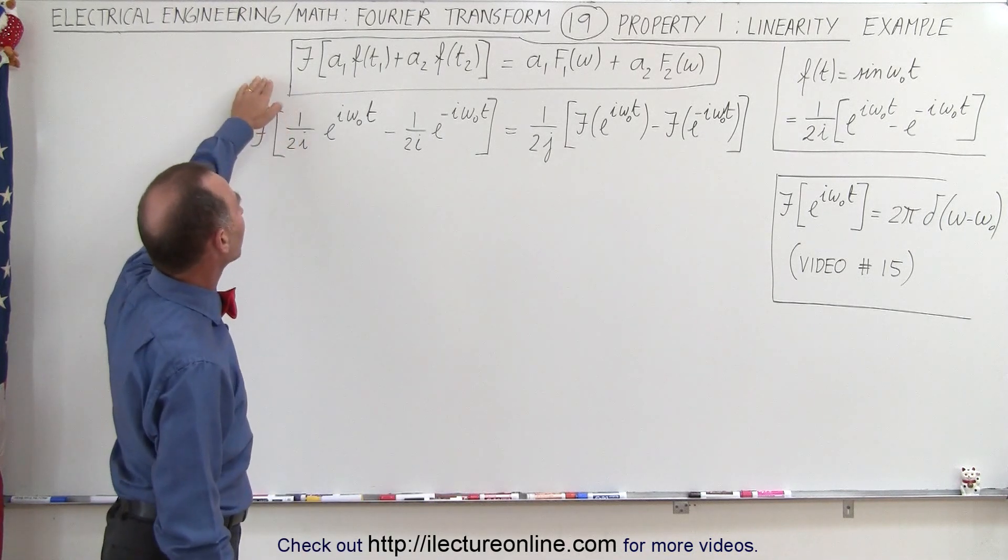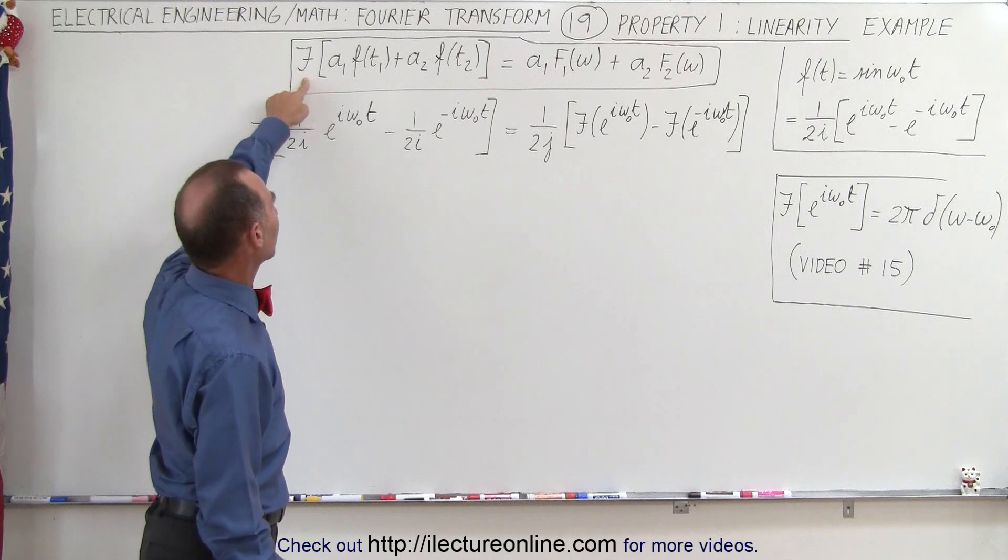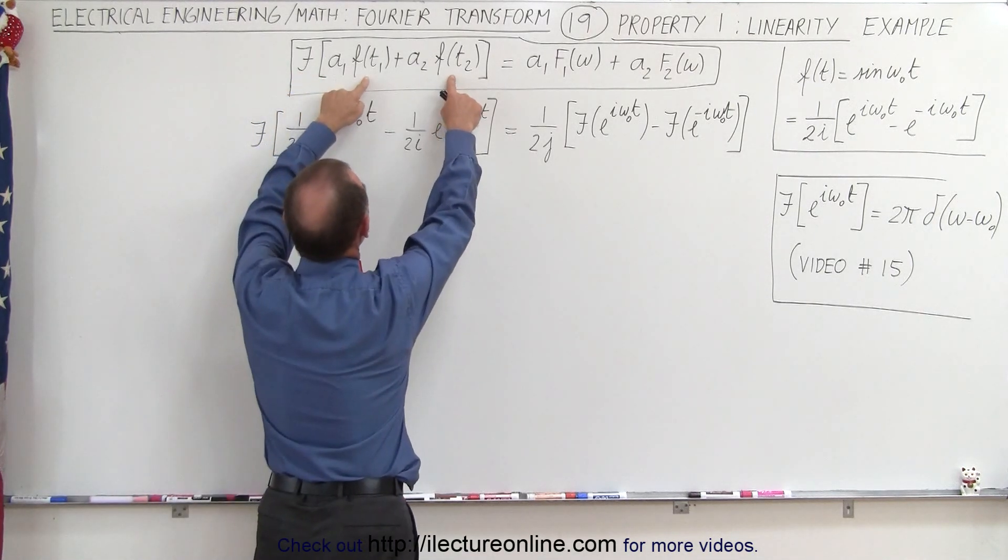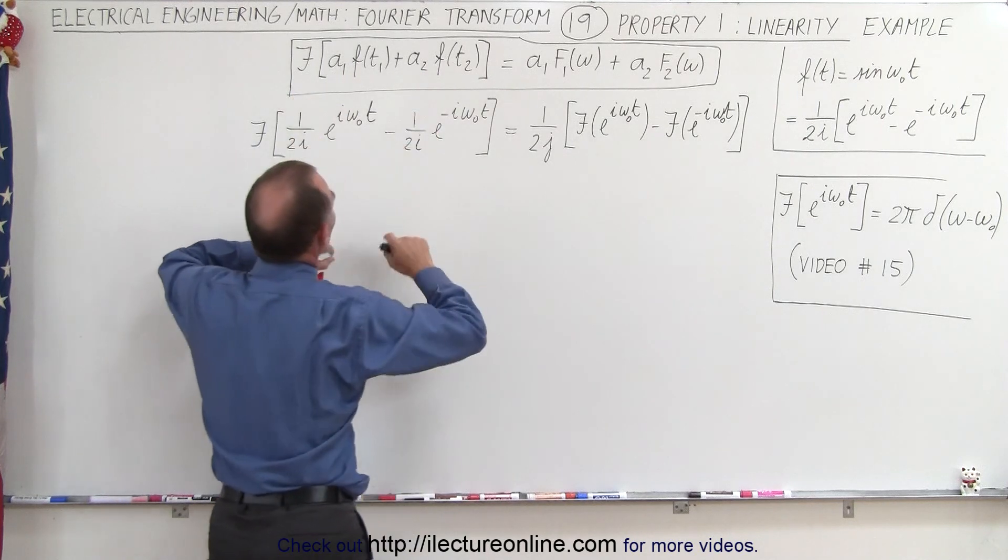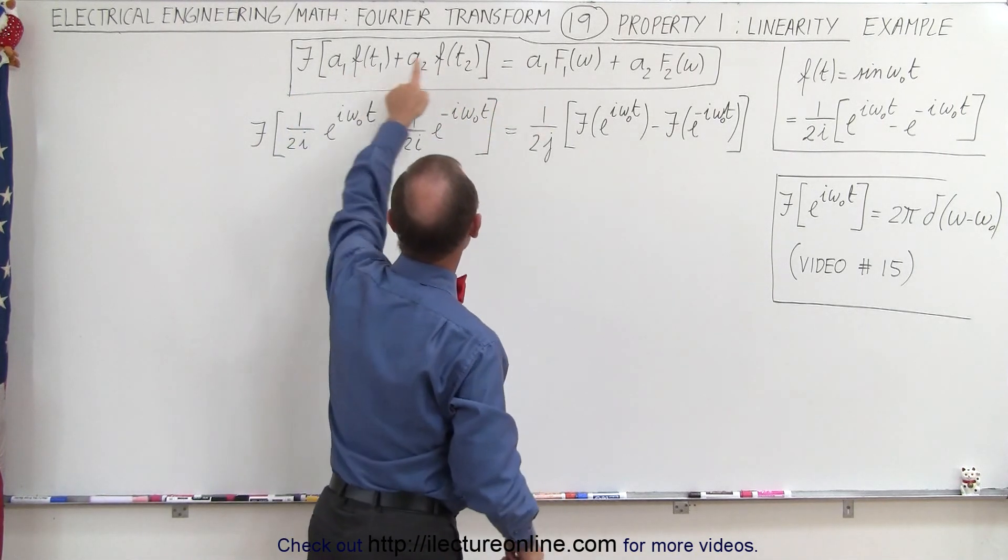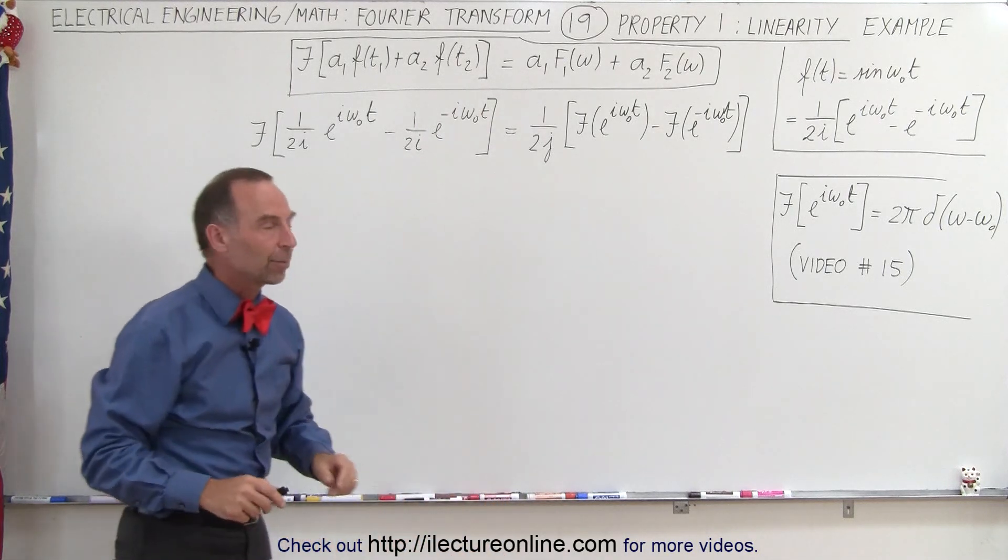Here again we have the property that if we're taking the Fourier transform of two separate input functions, each multiplied times a constant, you can see that the constant is simply multiplied by the Fourier transform of each of the separate functions.